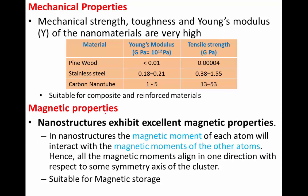Now let us see the magnetic properties of nanomaterials. Normally, nanostructures exhibit excellent magnetic properties. A material which is non-magnetic in bulk may have magnetic properties in nano size. This is because in nanostructures, the magnetic moment of each atom will interact with the magnetic moments of other atoms, causing the magnetic moments to become aligned in a particular direction. Therefore, a non-magnetic bulk material may be magnetic in nano size. This magnetic property of nanomaterials can be utilized in various storage applications — what we call magnetic storage — which is a very important application of nanomaterials.